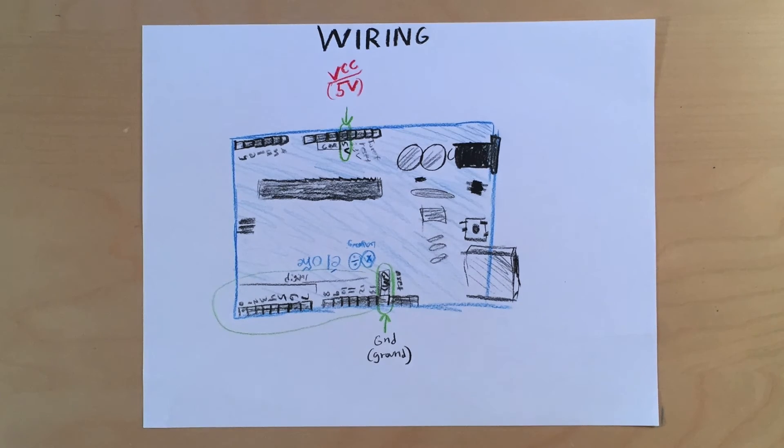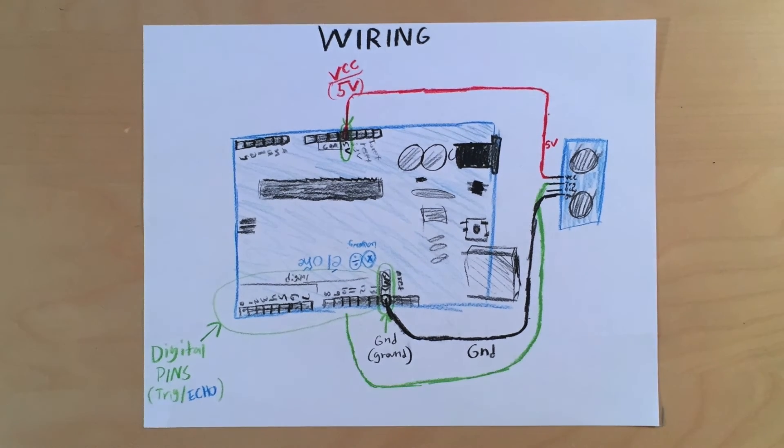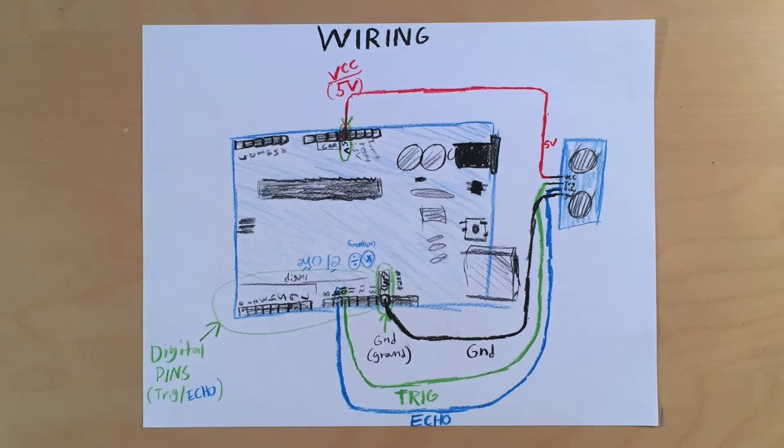Connect the ground from the sensor to the ground on the Arduino, same with the five volt, and then use two digital pins for the trig and echo.